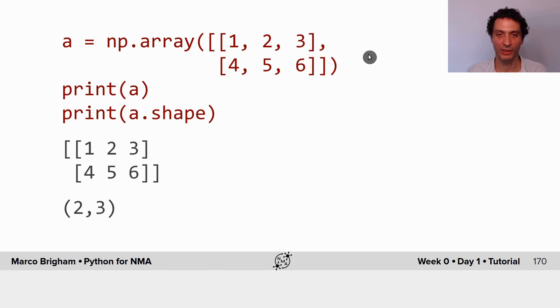So on dimension 0 we have two elements, these two, and then on dimension 1 we have three elements each, 1, 2, 3.